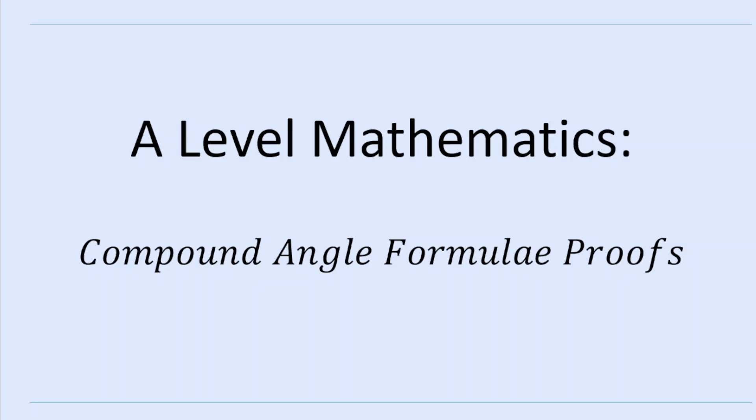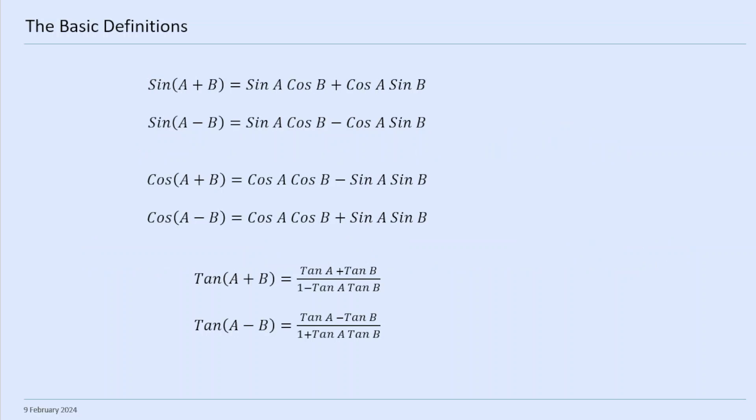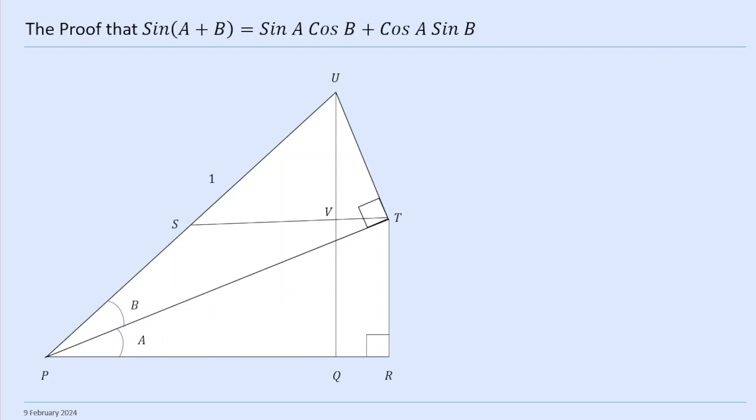Hello and welcome to Mathematics with Simon. I'm Simon. Today we are going to look at the proof of the compound angle formulae. So first, these are the compound angle formulae — there are six of them. First we're going to prove that sin(a+b) = sin(a)cos(b) + cos(a)sin(b).